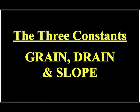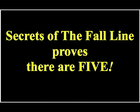Now remember, we're talking about the laws of golf. And within that are the three constants: grain, drainage, and slope. However, Secrets of the Fall Line will prove to you there are actually five. And the other two are just as obvious as grain, drainage, and slope.